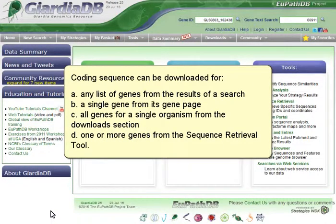Coding sequence can be downloaded for any list of genes from the results of a search, a single gene from its gene page, all genes for a single organism from the download section, or one or more genes from the sequence retrieval tool.